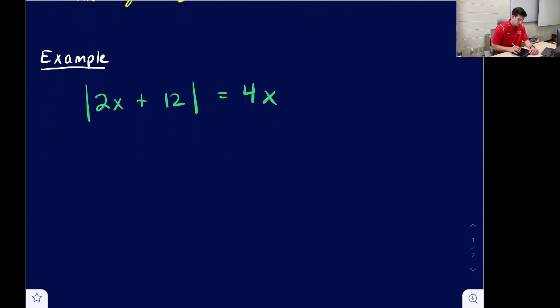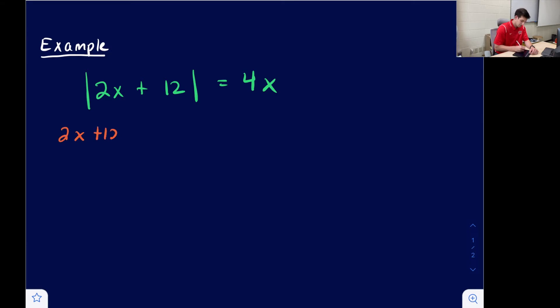So let's look at that. Our example is the absolute value of 2x plus 12 equals 4x. We are going to make two related linear equations. So 2x plus 12 equals 4x, or 2x plus 12 equals negative 4x. And we're just going to solve these two equations.